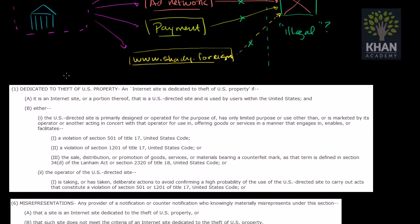And you see it in the wording. So this is actually section 103 of the SOPA legislation. And this is how they define a site that is dedicated to theft of US property. An internet site is dedicated to theft of US property if it's usable by people in the United States, and then this is interesting: it's primarily designed or operated for the purpose of, has only limited purpose or use other than, or is marketed by its operator or another acting in concert with that operator for use in offering goods or services in a manner that engages in, enables or facilitates.